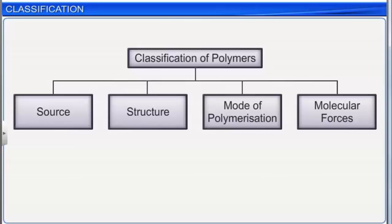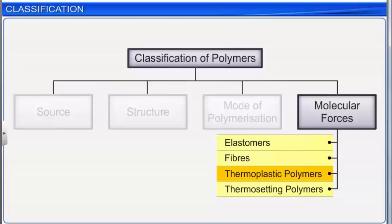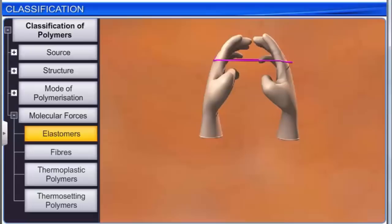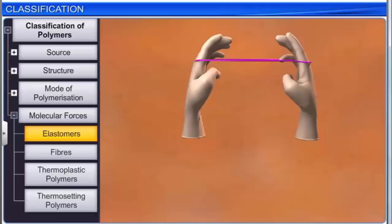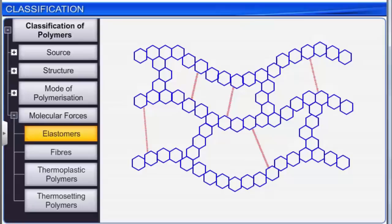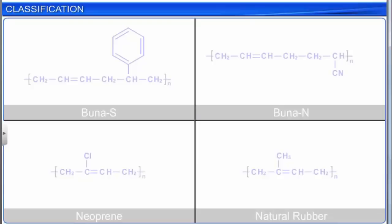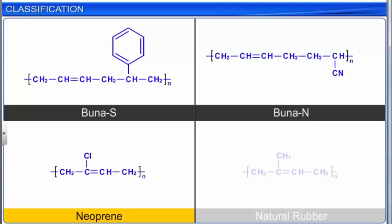Based on the molecular forces present in them, polymers are classified into four types: elastomers, fibers, thermoplastic polymers, and thermosetting polymers. Elastomers are rubber-like solids with elastic properties. An elastomer can be stretched to many times its original length and snaps back to its original length when the external force is released. The polymer chains in elastomers are held together by very weak intermolecular forces, and there may be a few cross-links between chains. Many elastomers are co-polymers. Examples include Buna-S, Buna-N, Neoprene, and natural rubber.